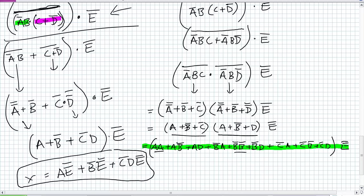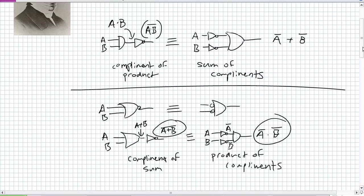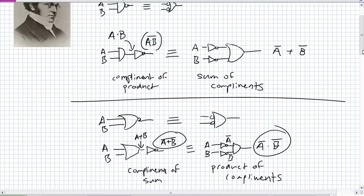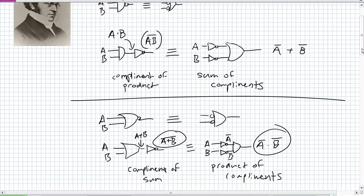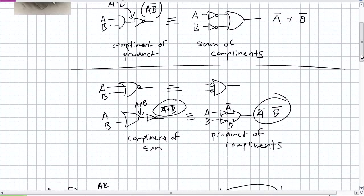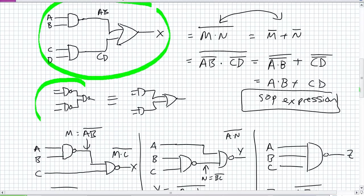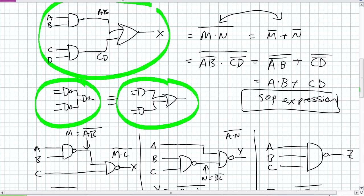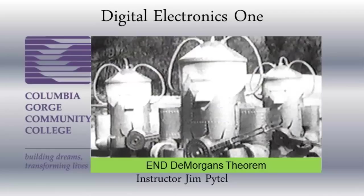What this lecture was about was De Morgan's Theorem as a precursor to further simplification work. All it really is, is a statement equating the NAND and the negative OR, and the NOR and the negative AND. The most powerful application is the SOP: nested NANDs are equivalent to the sum of products. Let's go ahead and apply this and everything else we've learned to do some logic simplification in the next lecture.